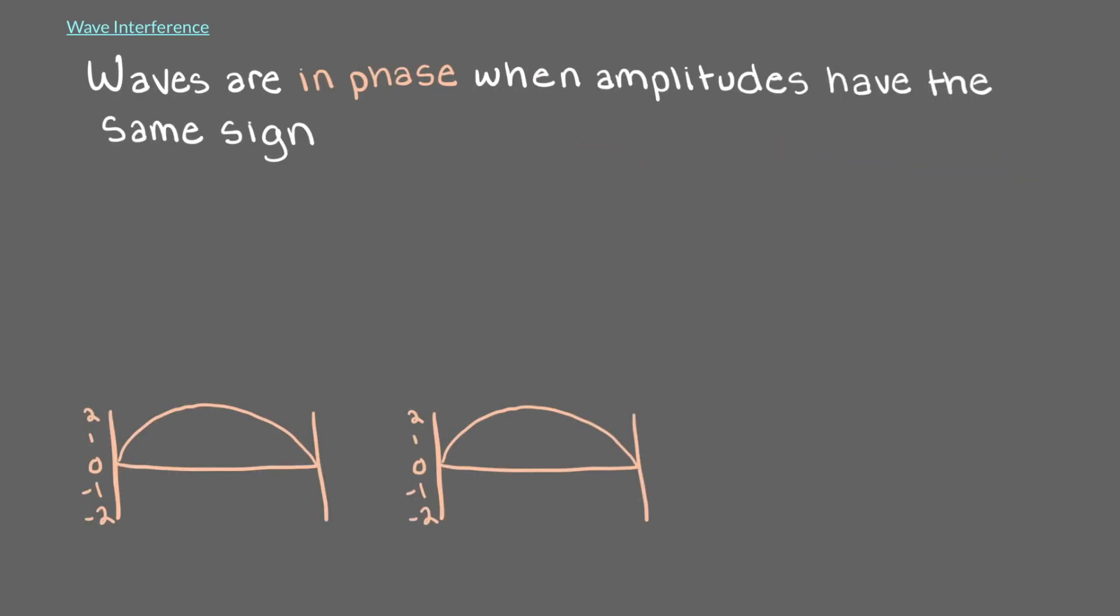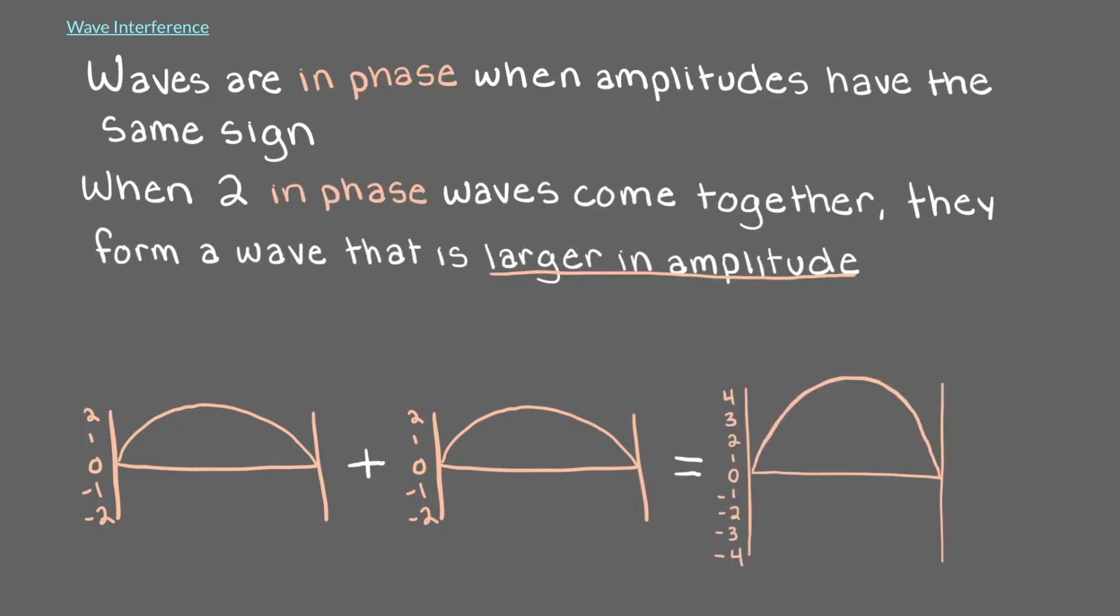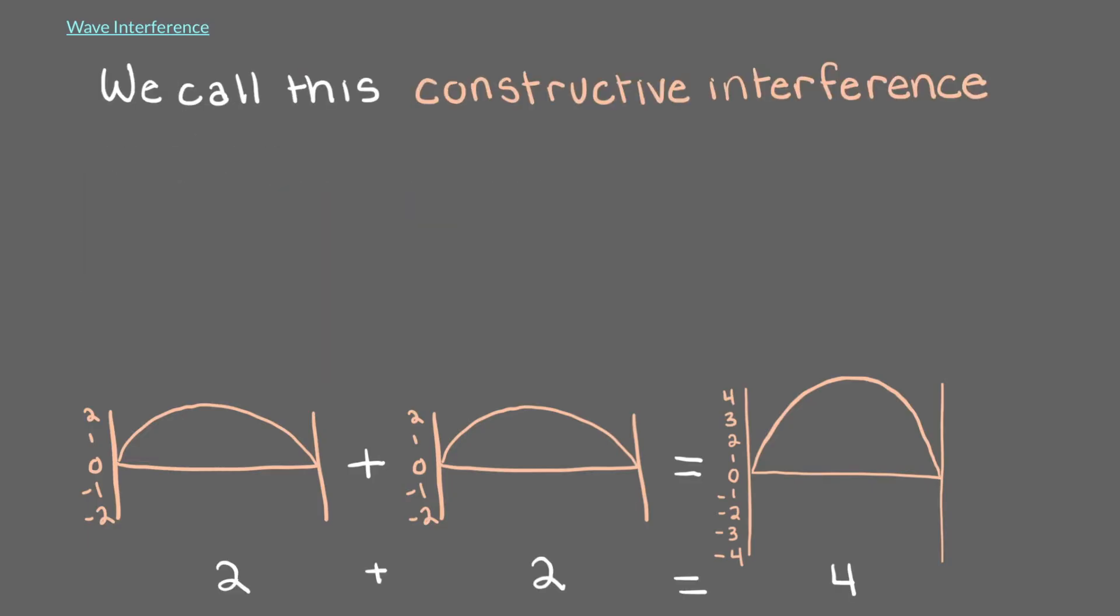Waves are in phase when amplitudes have the same sign. When two in-phase waves come together, they form a wave that is larger in amplitude. That's because the amplitudes get added together. We call this constructive interference.